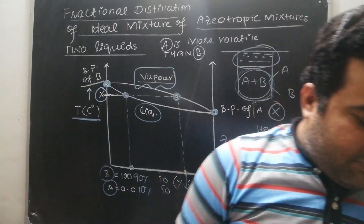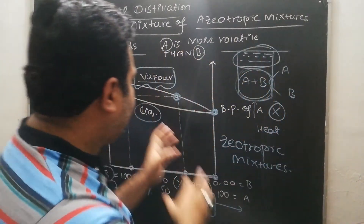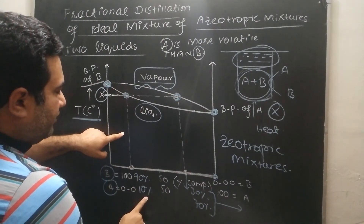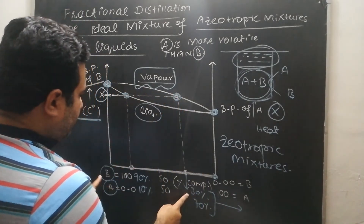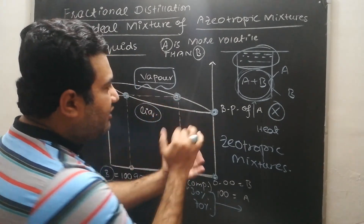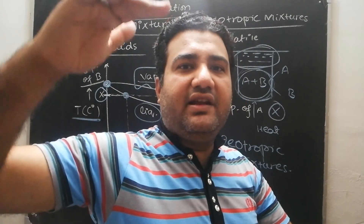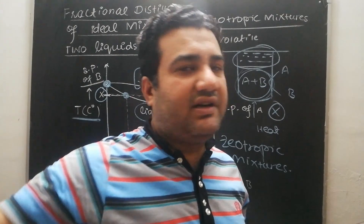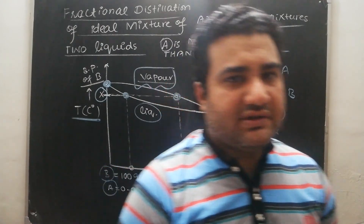So this was the discussion of zeotropic and azeotropic mixtures. To summarize: at temperature X, the liquid has more B and less A, but the vapor form has less B and greater A. When that vapor is condensed and redistilled, the vapor has even lower B and higher A. B keeps decreasing and A keeps increasing in the vapor state, and both get separated. That was all about the fractional distillation of ideal solutions. Thank you.